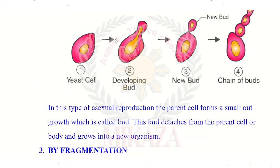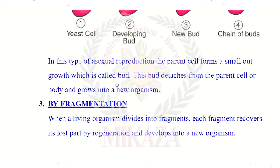Then budding, where daughter cells are smaller than the parent. And fragmentation — some animals, if they lose part of their body, can grow the other part back. For example, when a lizard loses its tail, it grows a new tail. Similarly, if the liver is cut, it becomes a new liver. This regeneration process allows a lost organ or body part to develop again — the whole organism can be restored. This is called fragmentation.